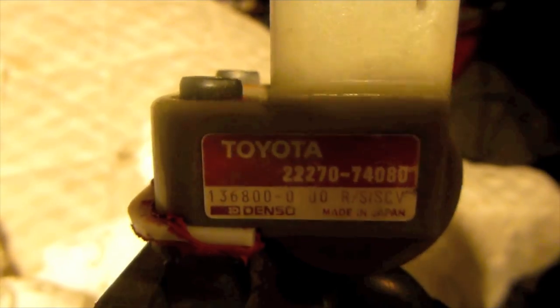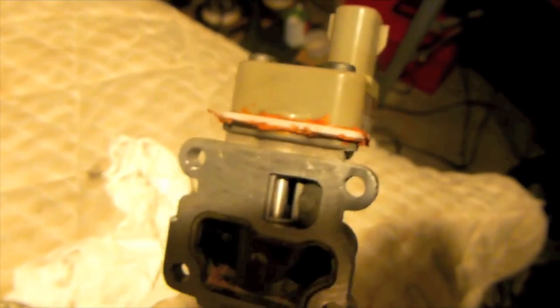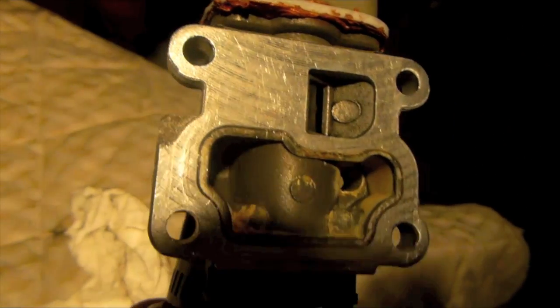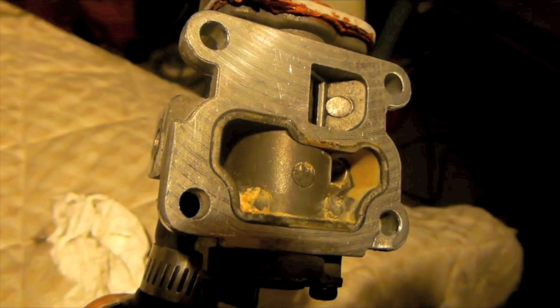Hello. I thought I'd make a quick video to show how the idle air control valve, also referred to as the idle speed control valve, works on the 3S GTE engines found in Toyota MR2s and Celicas.